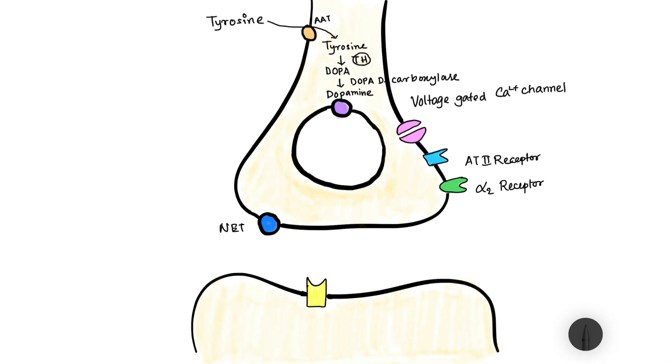Now this dopamine is taken up into the presynaptic vesicles via transporter known as VMAT, that is vesicle membrane active transport. This dopamine within the vesicle is converted into norepinephrine by dopamine beta hydroxylase enzyme.